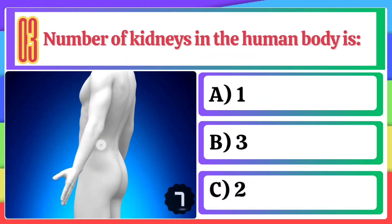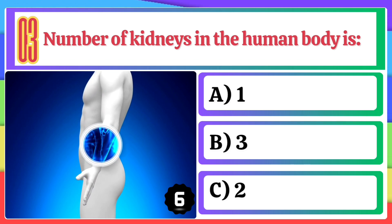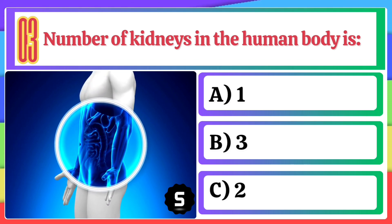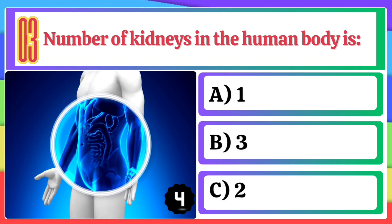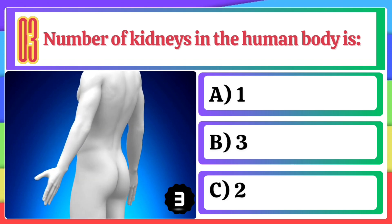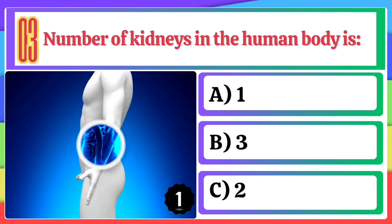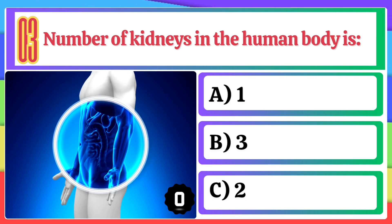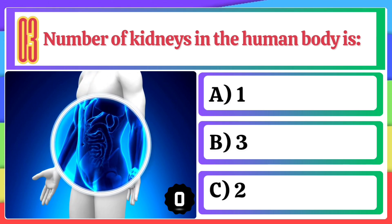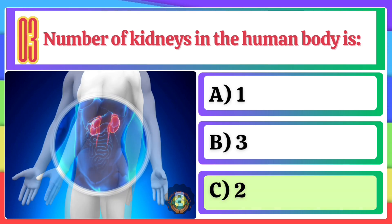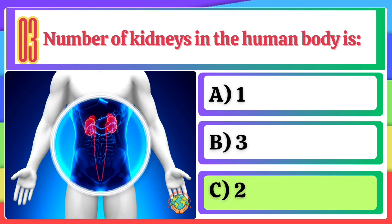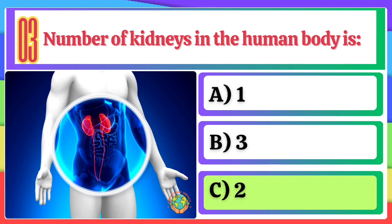Number of kidneys in the human body is: A) 1, B) 3, C) 2. The correct option is C, 2.